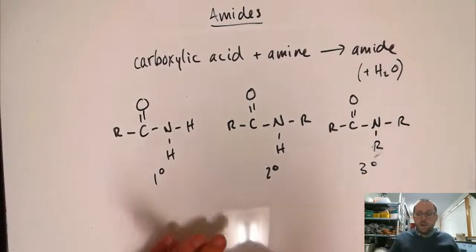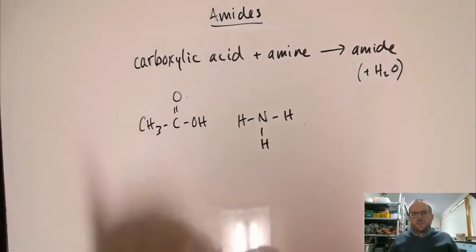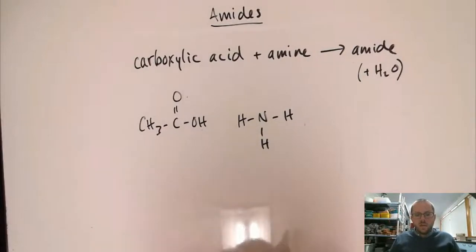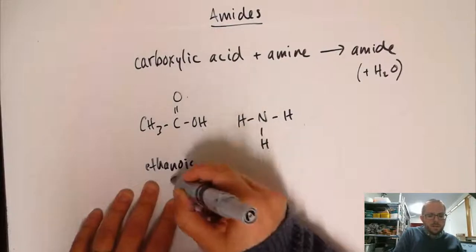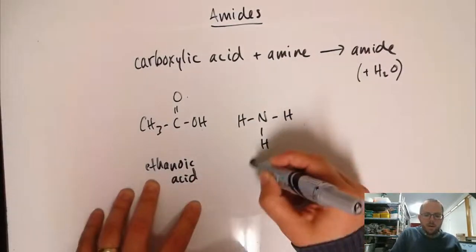We're now going to have a look at how we name amides. In order to really get how this naming works, I want to show you how amides actually form. What I have here is ethanoic acid, also known as acetic acid, and I have ammonia.